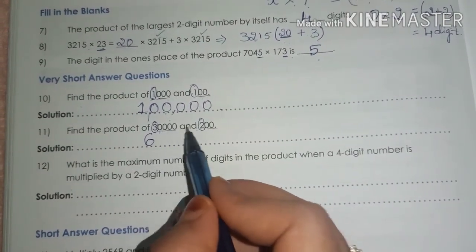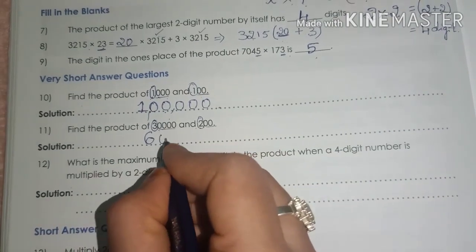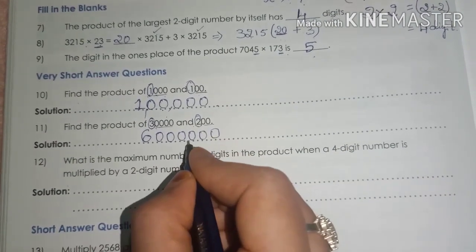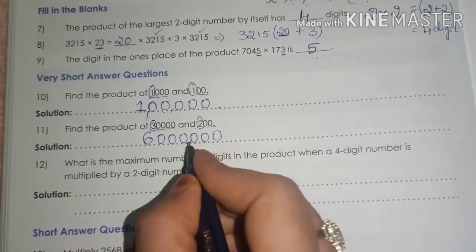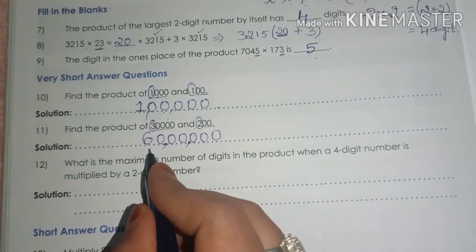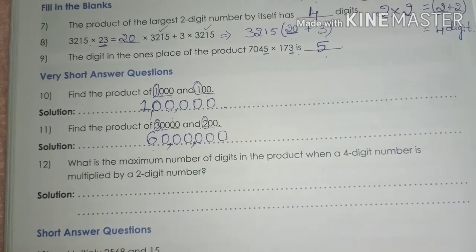Then, write down the total number of zeros. 1, 2, 3, 4, 5, 6. 6 zeros. 1, 2, 3, 4, 5, 6. Then, write down the commas. After 3 digits, then after 2 digits. 60 lakh is your answer.